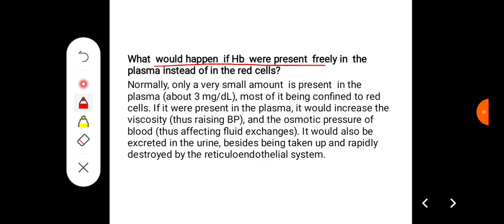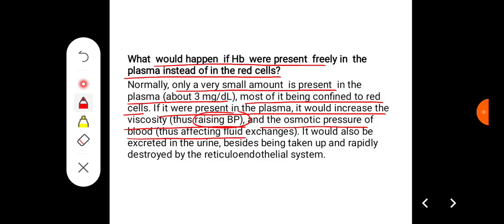What would happen if hemoglobin were present freely in the plasma instead of in red cells? Normally, only a very small amount is present in the plasma, about 3 milligrams per deciliter, and most of it is confined to the red cells. If it were present in the plasma, it would increase the viscosity, thus increasing blood pressure and the osmotic pressure of the blood, which may affect fluid exchanges. It would also be excreted in the urine, besides being taken up and rapidly destroyed in the reticuloendothelial system.